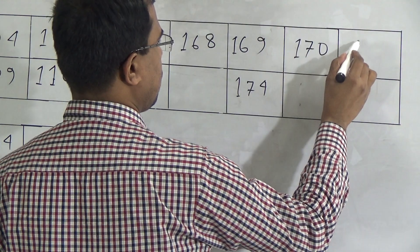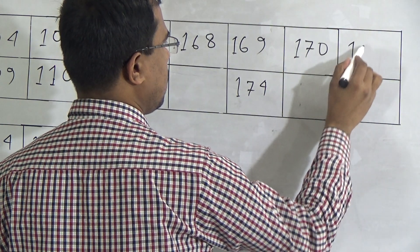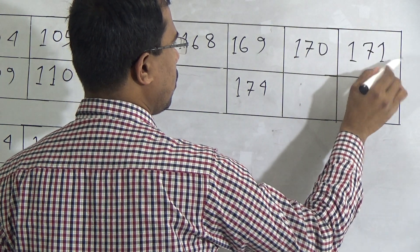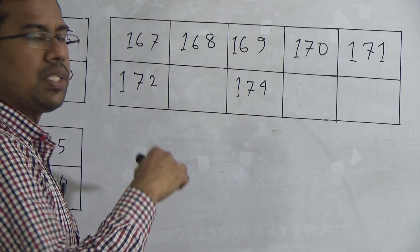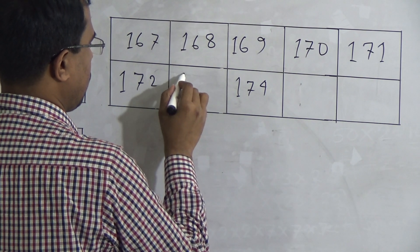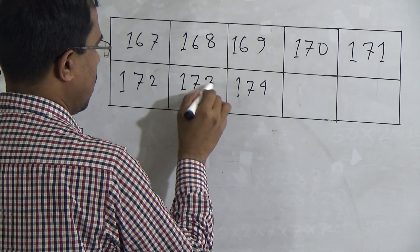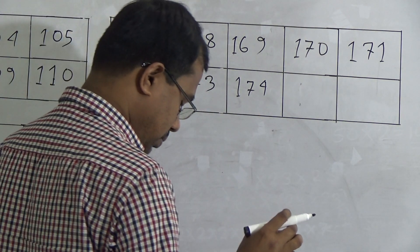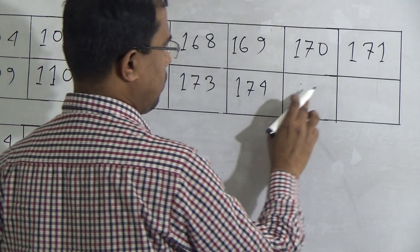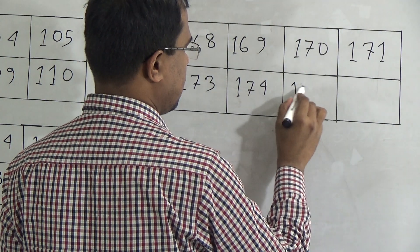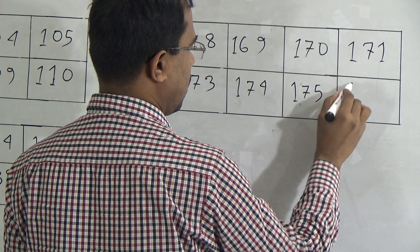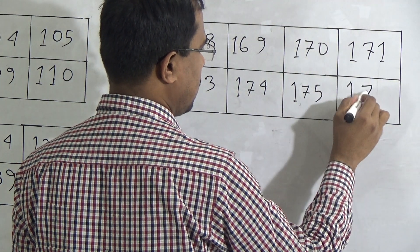170 then 71. That means 171. Then 172. After 72, we know that next number of 72 is 73. So, here we have to write 173. Then 174. After 74, next number will be 75 then 76. That means 175 then 176.